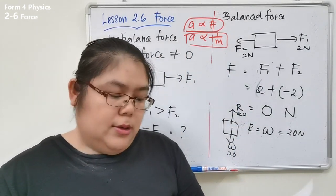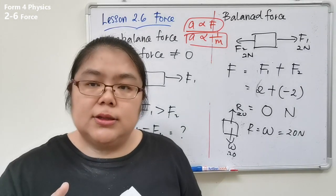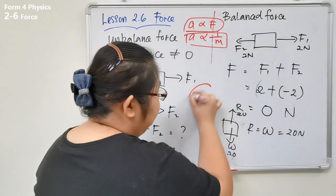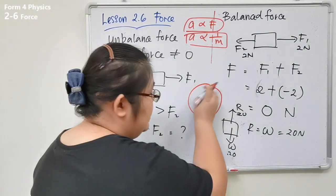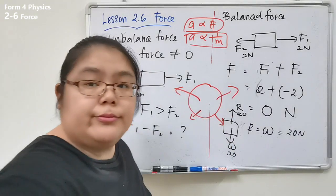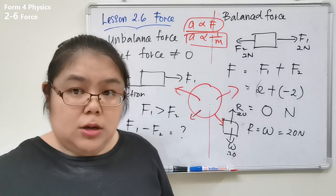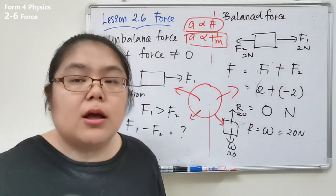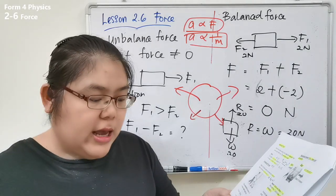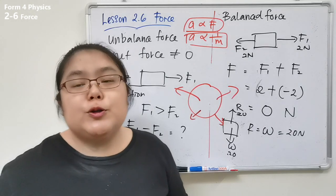Newton's Third Law: for every action there is an equal and opposite reaction. Any action that occurs must produce a reaction of equal magnitude but in the opposite direction. For example, when a bomb explodes — before it explodes nothing moves, but after the explosion parts fly in opposite directions with equal magnitude. This is also similar to the concept of explosion in momentum.